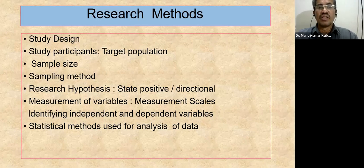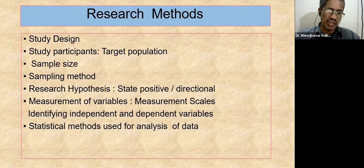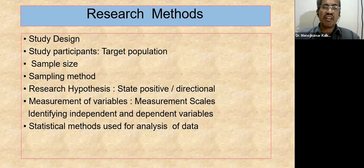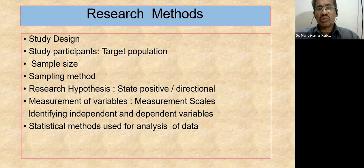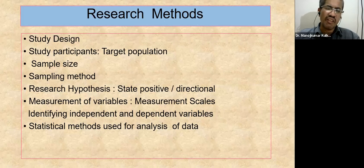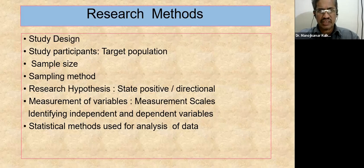Identify what different statistical methods you are using to analyze the data. What sort of analysis are you using? Which tests — such as correlation, regression, student t-test, chi-square test, ANOVA, multivariate analysis, factor analysis, or discriminant analysis — all this has to be added. Stating these in your research methodology makes the analysis very easy.